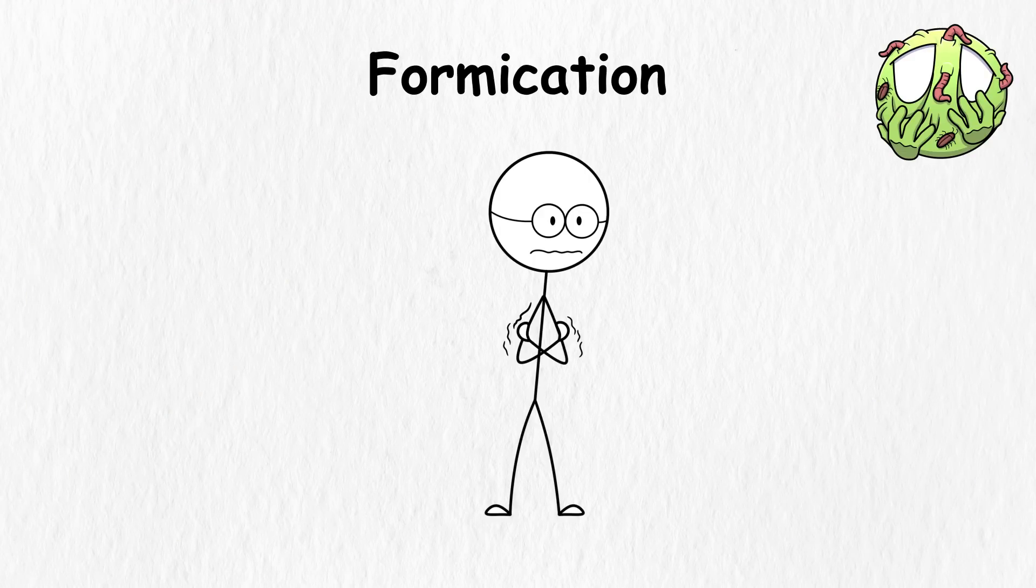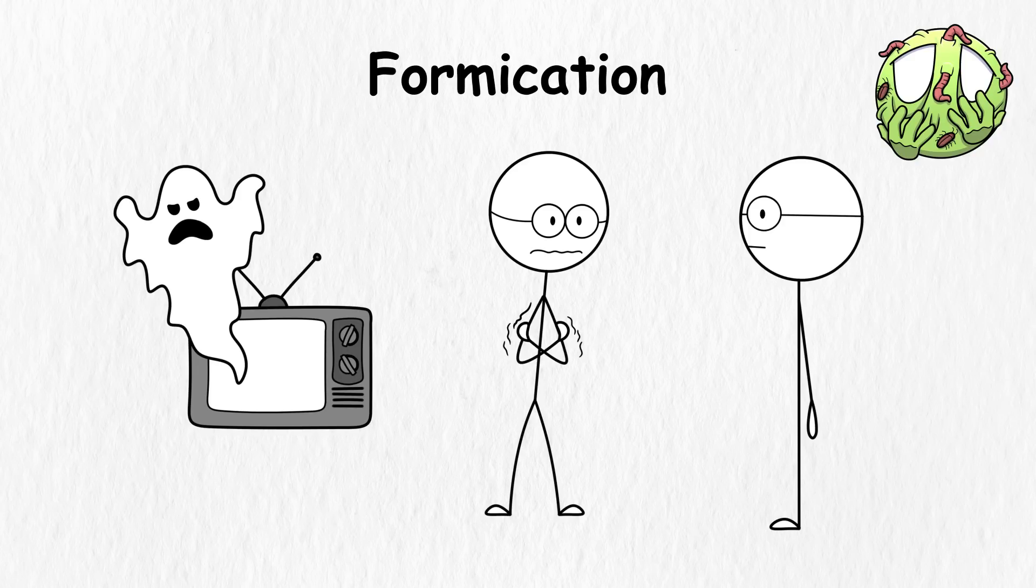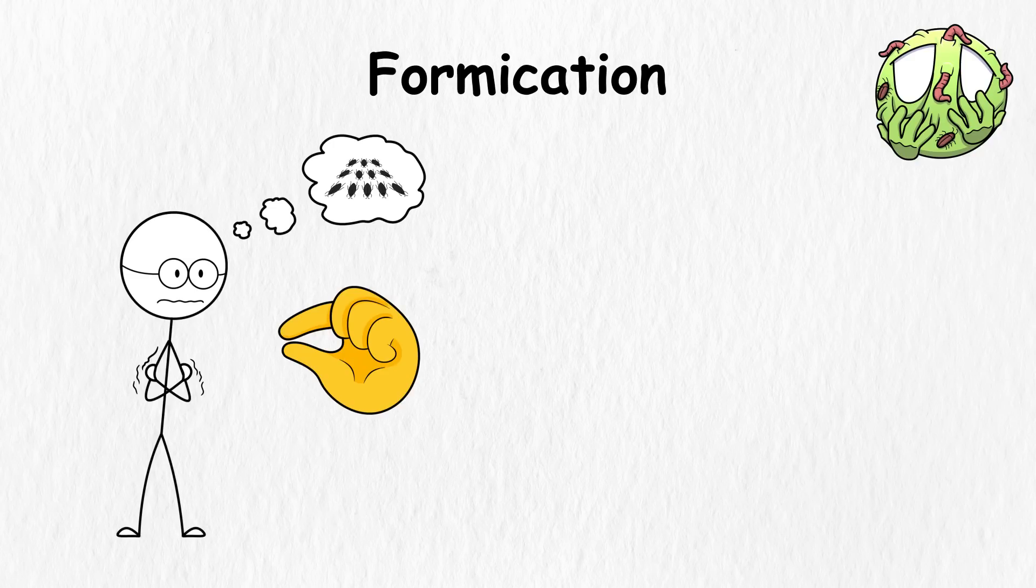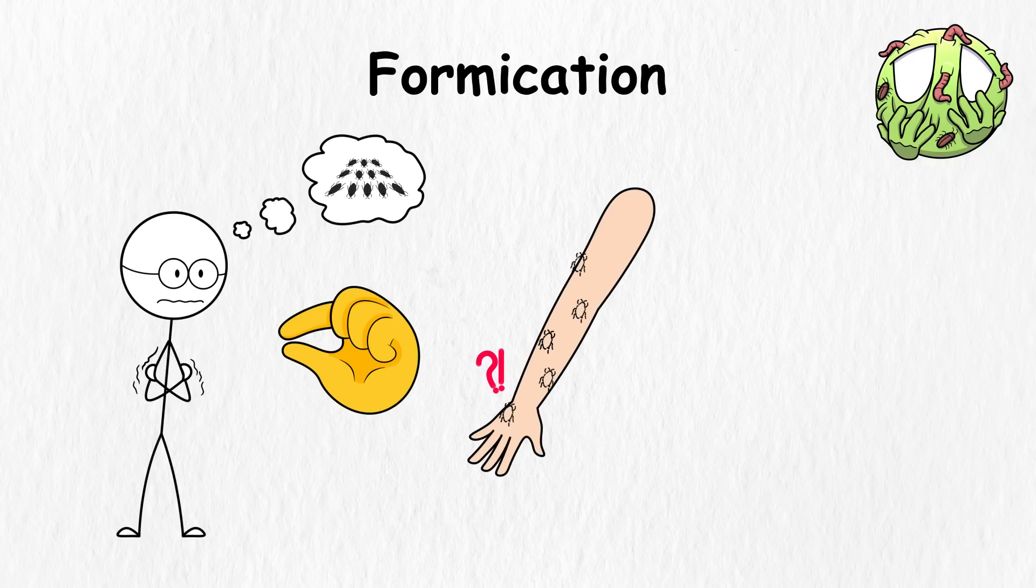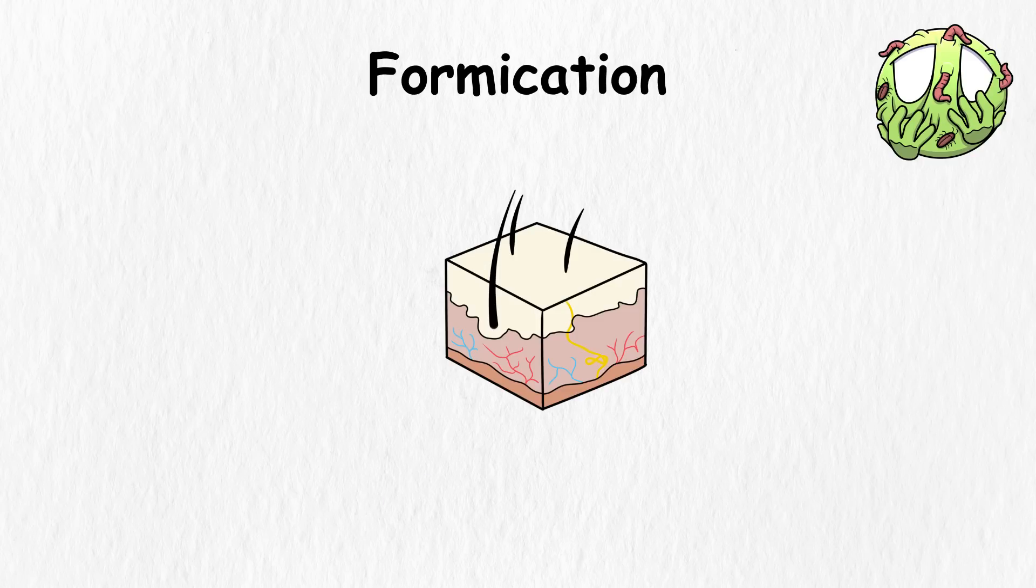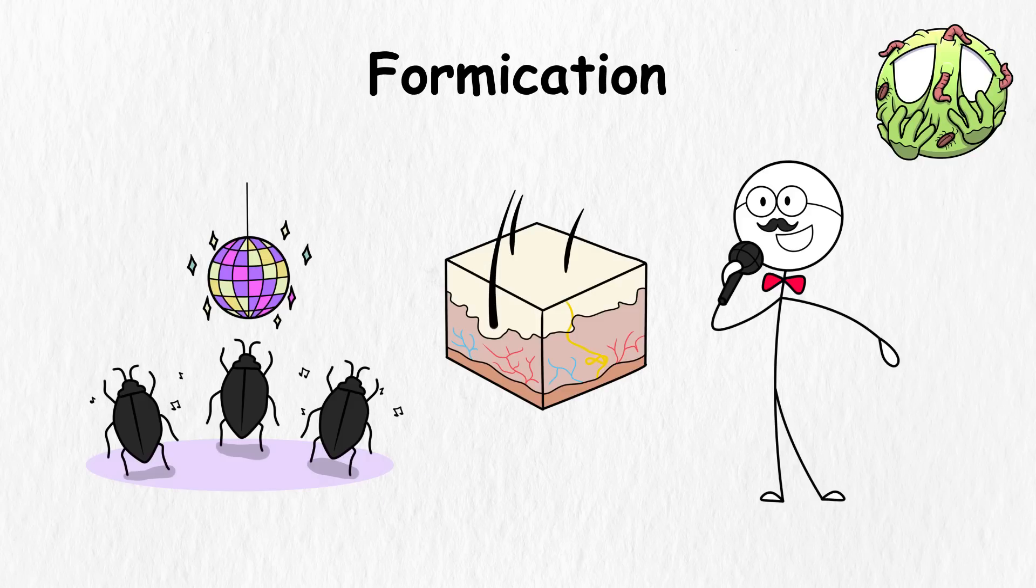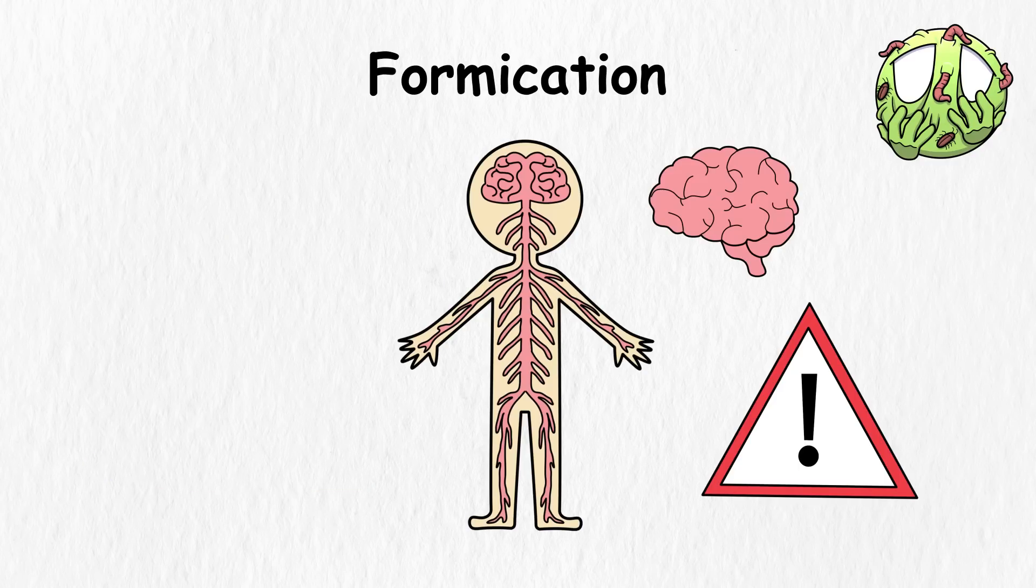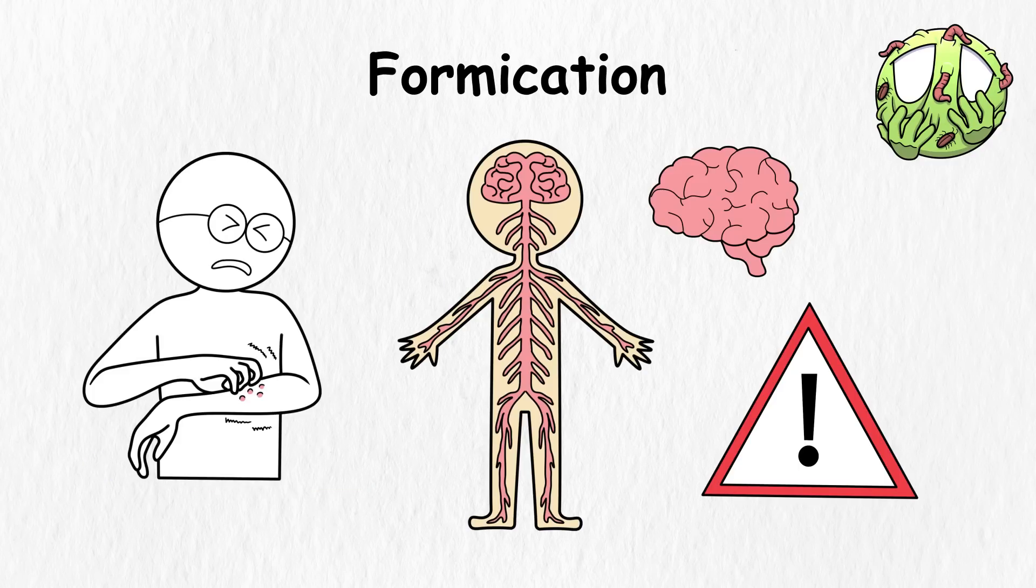Formication. Suffering from formication is like being a side character in a horror movie about bugs. It's the feeling you get when you think that bugs and other tiny creatures are crawling on your skin, even though there isn't anything there. Formication is characterized by a tingling and itching sensation that can be uncomfortable or even distressing. Your skin decided to host an invisible bug party without telling you about it. Essentially, what happens is that the nervous system sends false signals to the brain, making a certain part of the body itch for no reason.